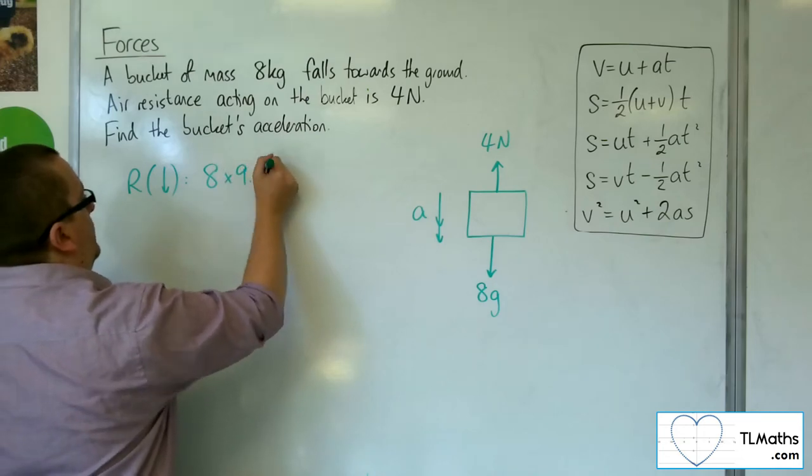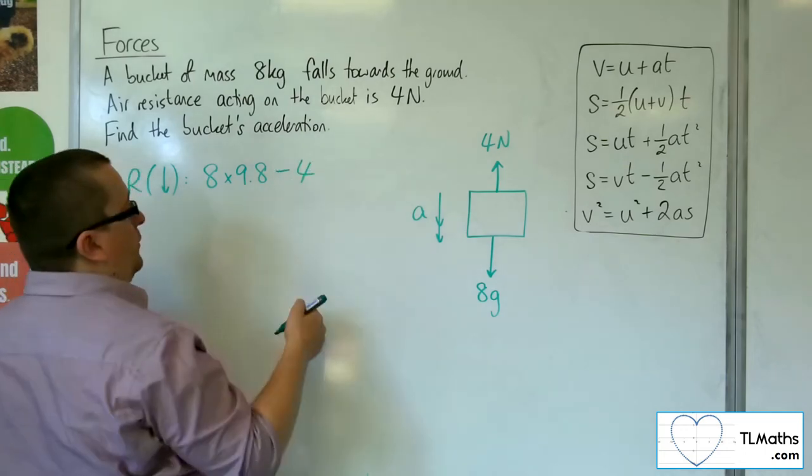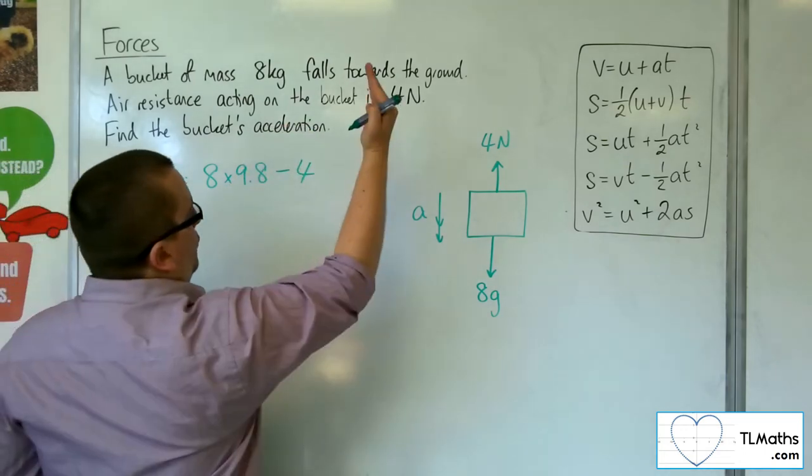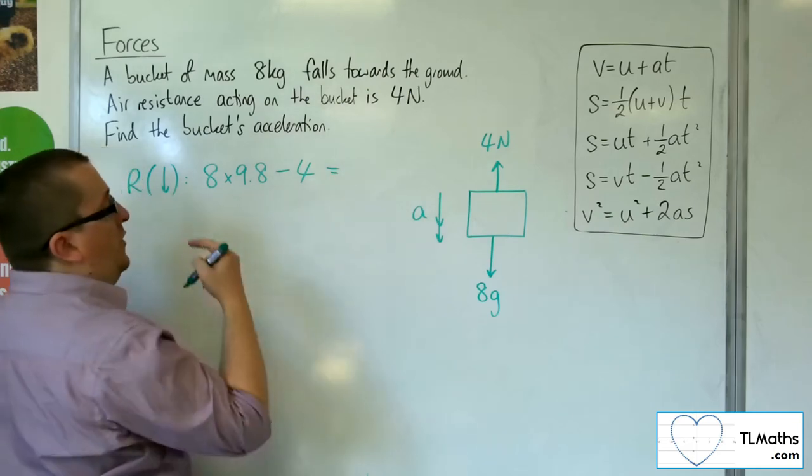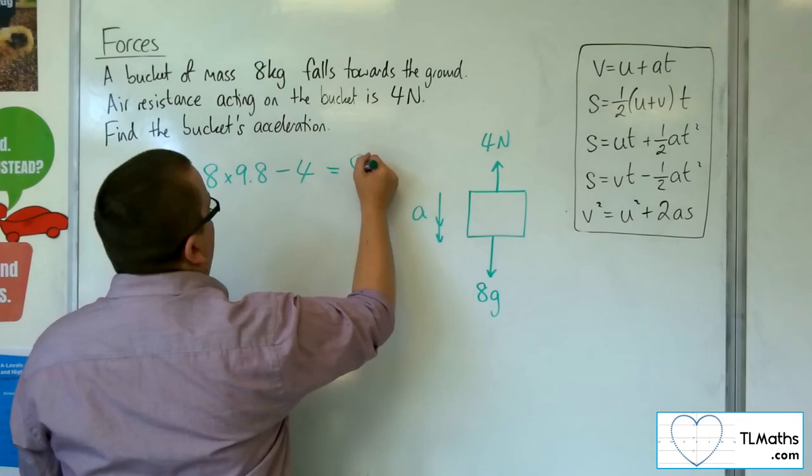So 8 lots of 9.8, take away the 4 newtons. I've got 8g minus 4 newtons, and that's equal to the mass of the object times acceleration. F equals ma, so that's 8a.